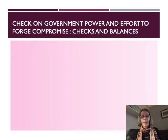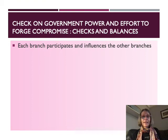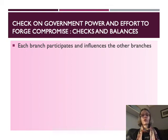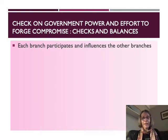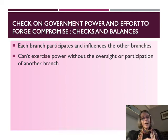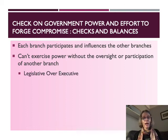Another mechanism the framers put in place is checks and balances — each branch participates in and influences the other branches. To get anything done, one branch needs to cooperate with or get the approval of another. There are very limited opportunities for one branch to act without the oversight and approval of another. There are some unilateral powers like the president's pardon power, but those are rare. Here are some examples.